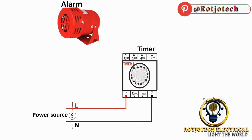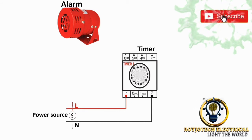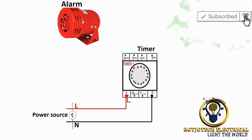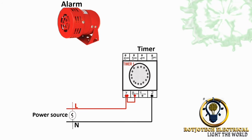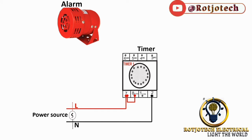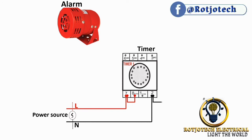But to supply power to the common of this timer, we are going to loop from terminal number 7 to terminal number 8. Now that we have looped from terminal number 8, we are going to connect neutral to the alarm, and we are going to connect it from terminal number 2 straight to the alarm.